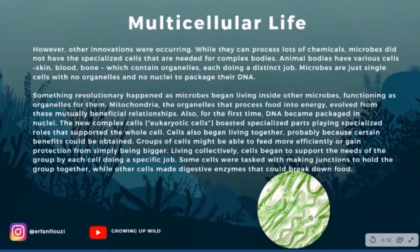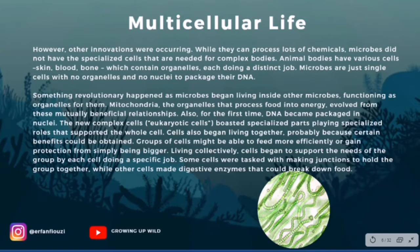Something revolutionary happened. As microbes began living inside other microbes, functioning as organelles for them, mitochondria — the organelle that converts food into energy — evolved from these mutually beneficial relationships. Also for the first time, DNA became packaged in nuclei. These new complex cells, eukaryotic cells, boasted specialized parts playing specialized roles that supported the whole cell.